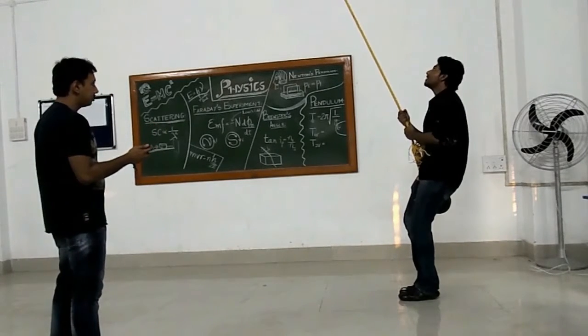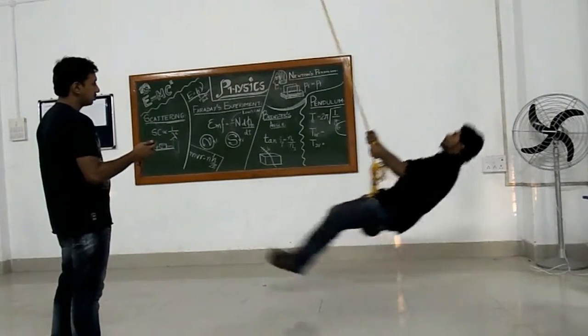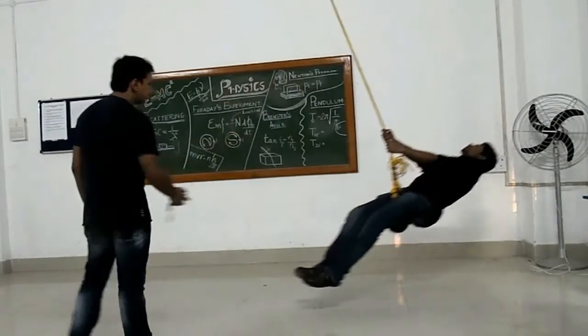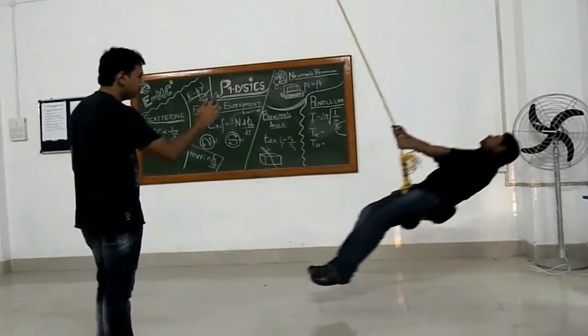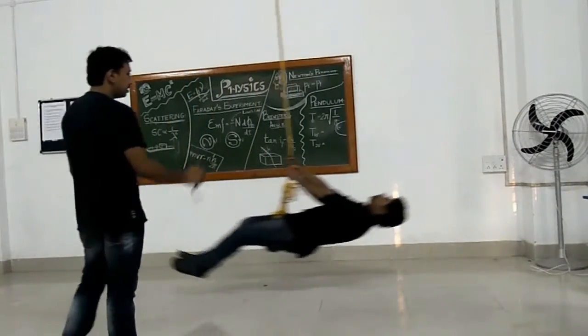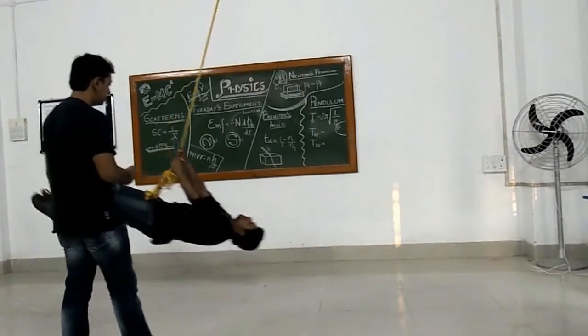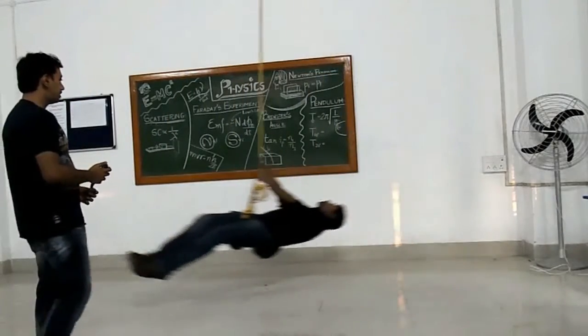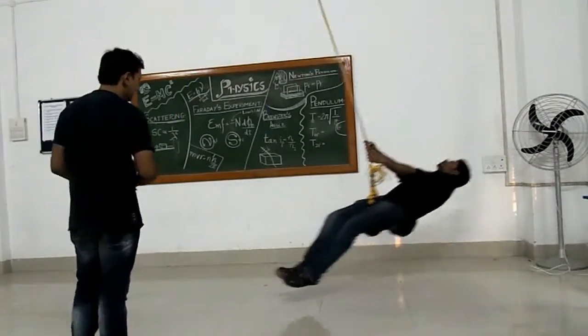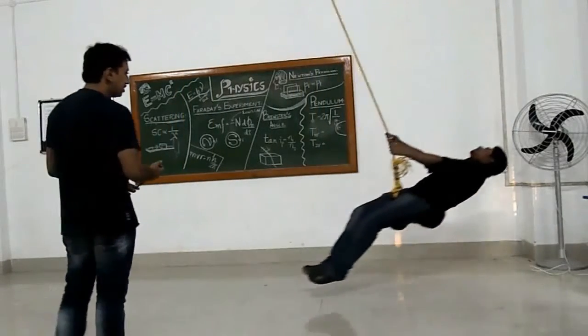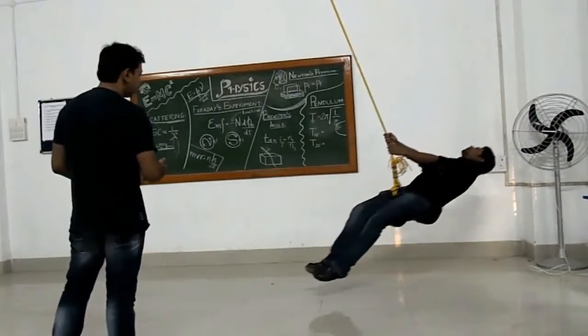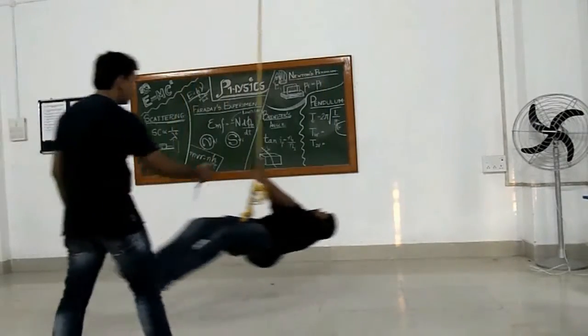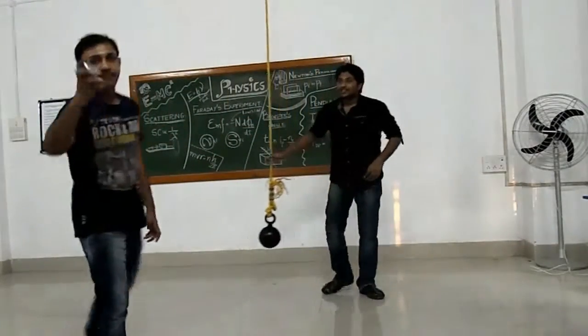Counting oscillations: 1, 2, 3, 4, 5, 6, 7, 8, 9, 10. The result is 35.9 seconds for 10 oscillations.